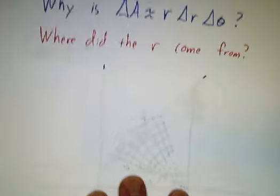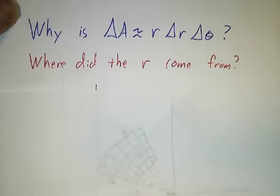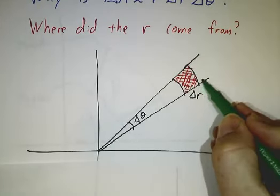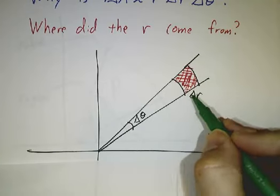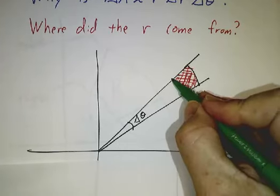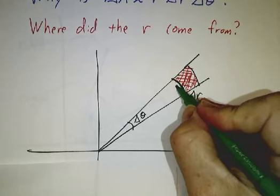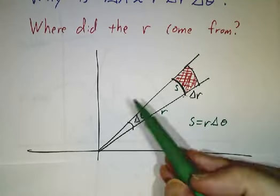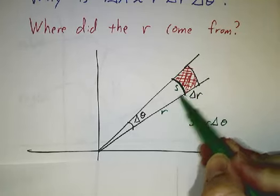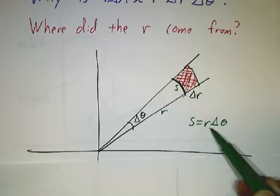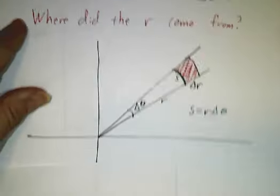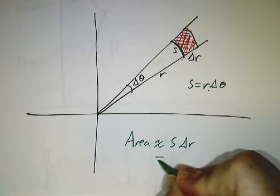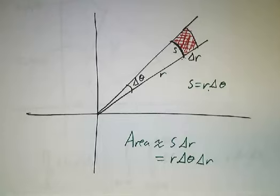So where did this funny factor of r come from? Why do we have r dr d theta and not dr d theta? We have to figure out the area of one of our little rectangles. Now we call it a polar rectangle, but if delta r is small enough and delta theta is small enough, it is pretty close to a rectangle. Its depth is delta r, but its width is not delta theta. Again, delta theta is an angle. If we call the width s, then s is r times delta theta. Remember, when you work with radians, the angle is the distance divided by the radius. So delta theta is s over r, s is r delta theta. So the area of this red region is approximately s times delta r, which is r times delta theta times delta r. That's where the factor of r comes from.